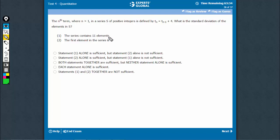The series contains 11 elements and each term is greater than the previous element by 4. These are all positive integers.